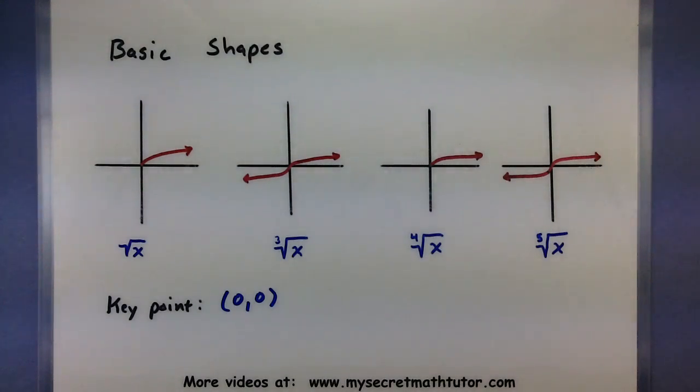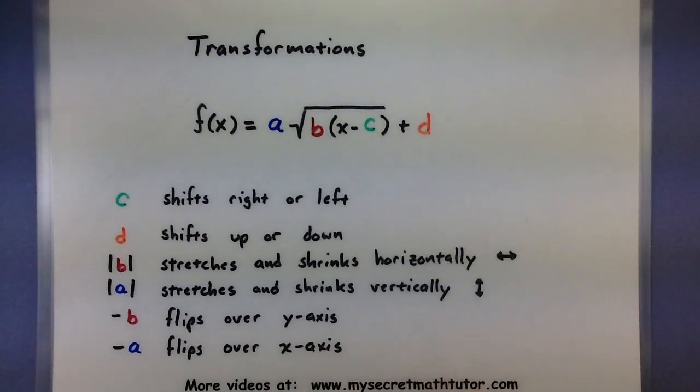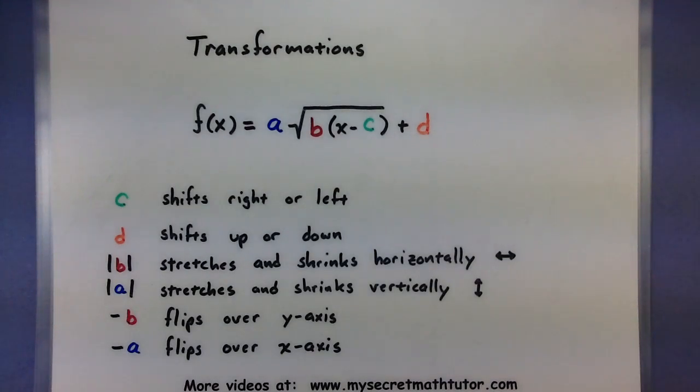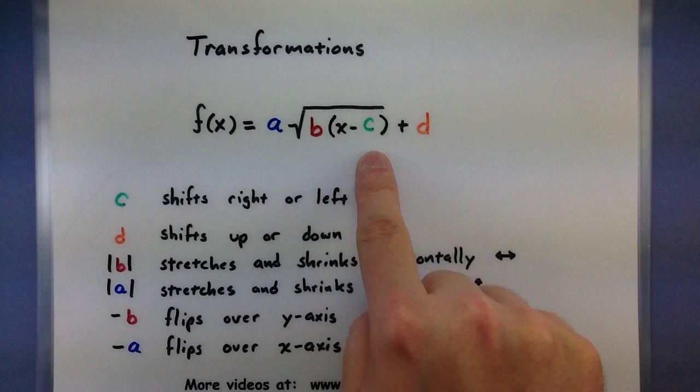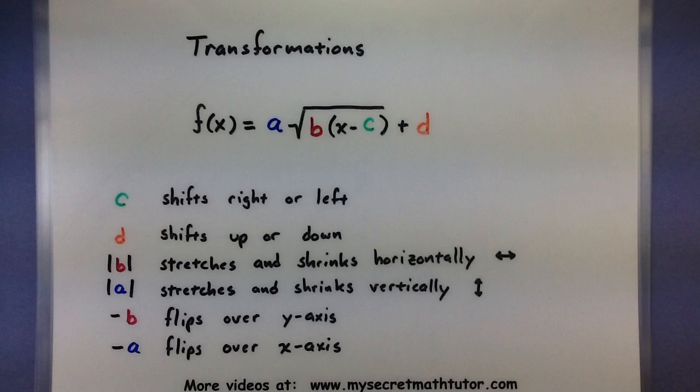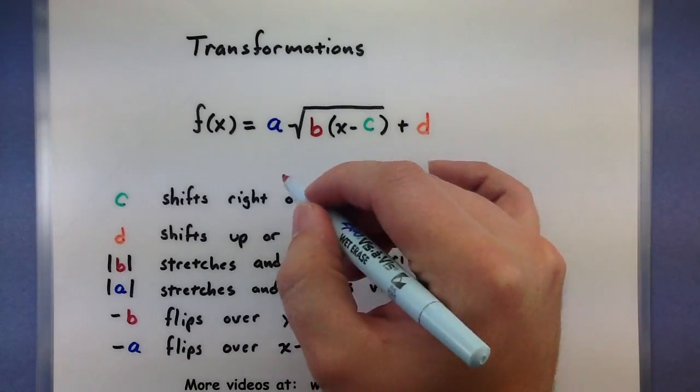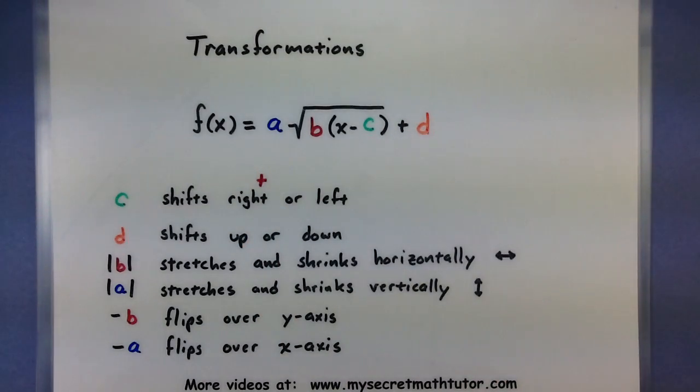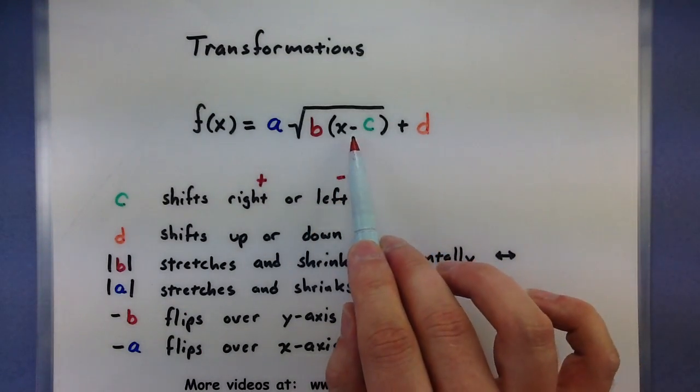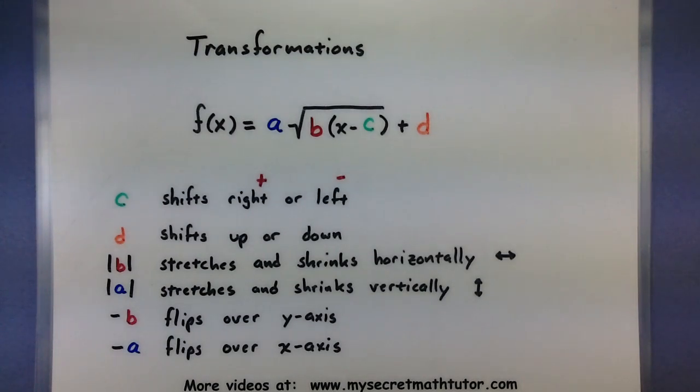Now that you have the basic shapes let's see how you can start reading the transformations in a radical. So when we're dealing with a radical these are the parameters a, b, c, and d that we're worried about or at least we're trying to read. Let's start off with the ones that are on the inside. So whatever is right next to x like x minus that value, that value will shift it left or it will shift it right. To really determine what it's doing think of it this way. If the value of c is going to be positive then it's going to shift it right. If it's negative it is going to shift it left. Now keep in mind there is already a negative sign in there.